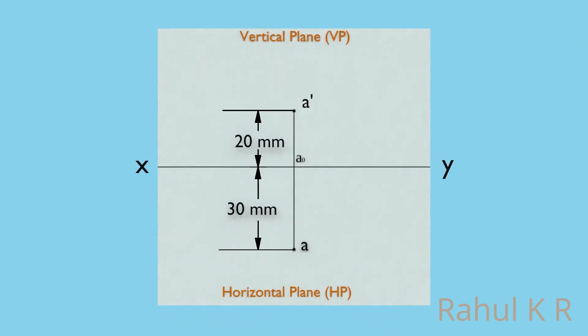As you can see, the front view is above the XY line and the top view is below the XY line. So for any object placed in the first quadrant, its front view will be above the XY line and top view will be below the XY line.